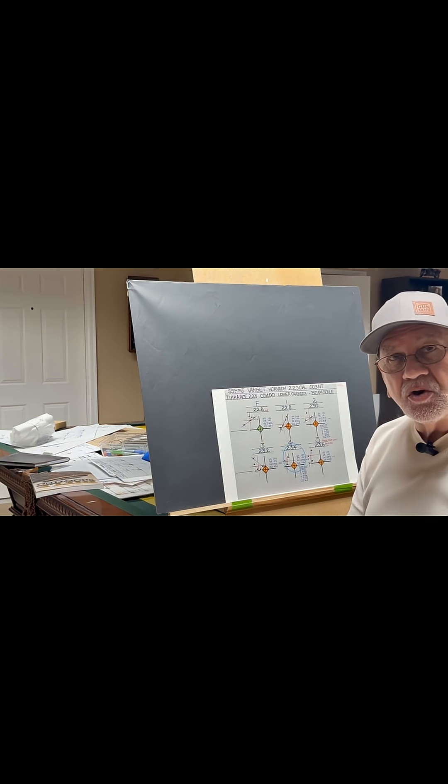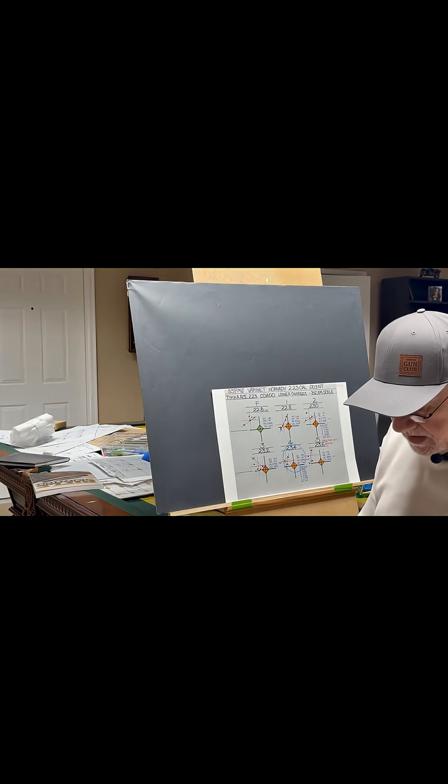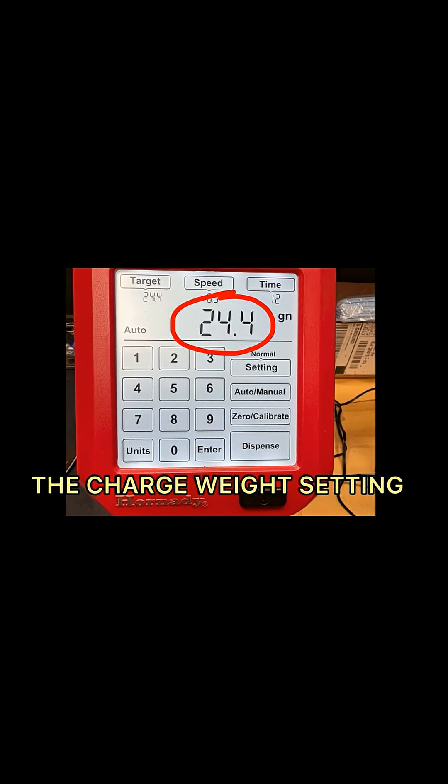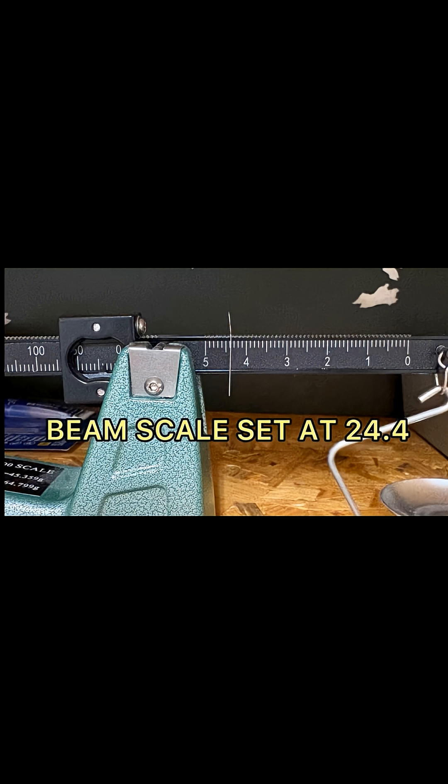But here's a video showing where I had the Auto Charge Pro set at 24.4 grains. I set the scale at 24.4, and then I begin to drop 10 charge weights.